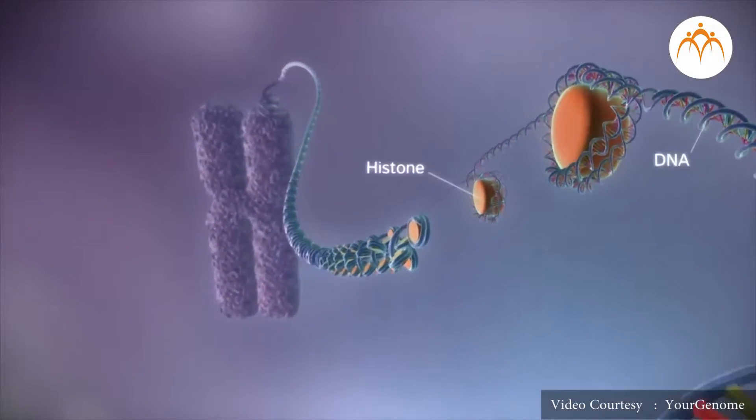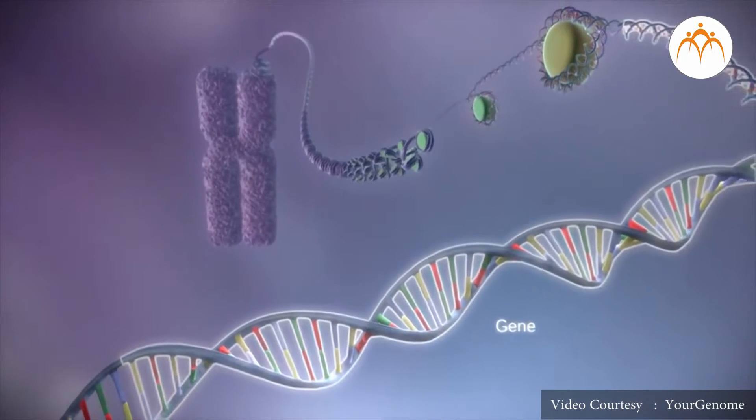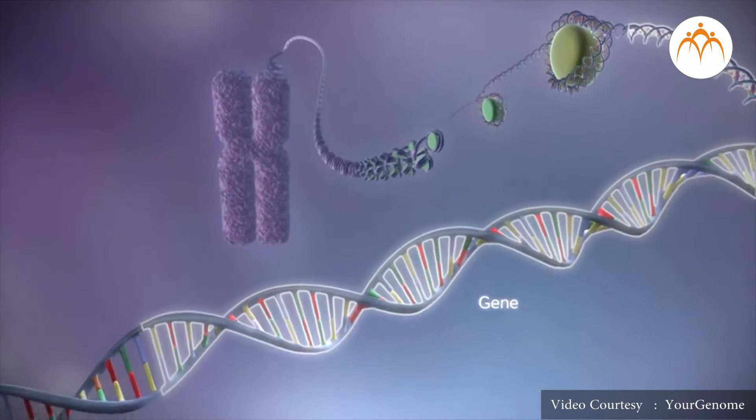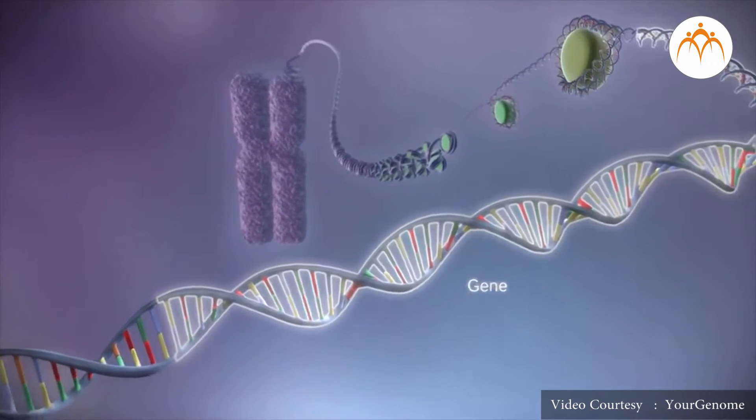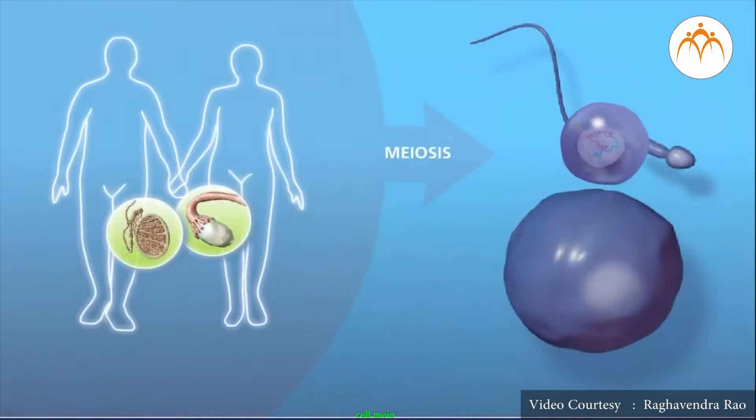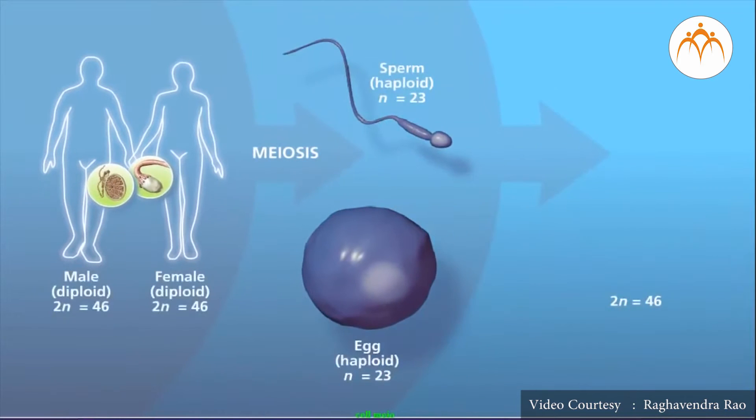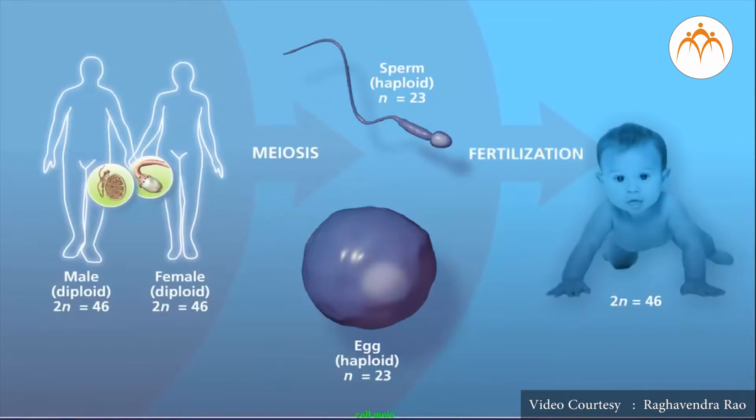Chromosomes carry another important structure called a gene. Genes are hereditary units of an organism. It helps in the inheritance of traits from one generation to another, that is from parents to offspring.